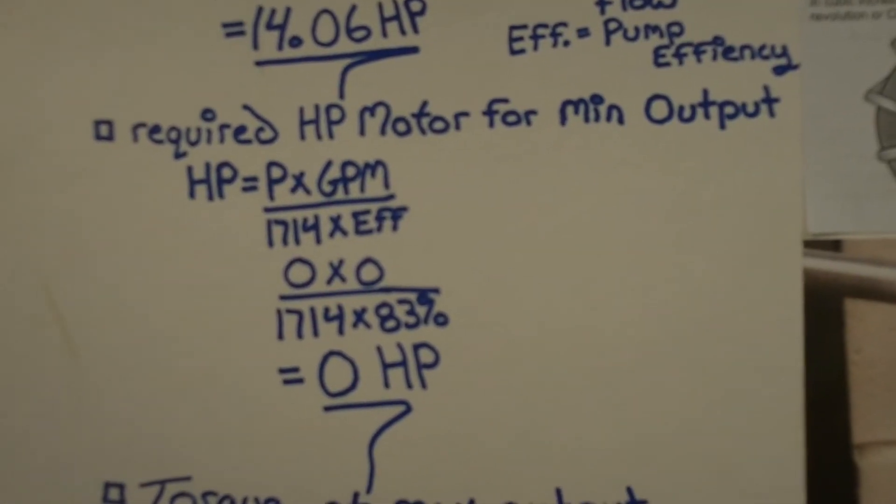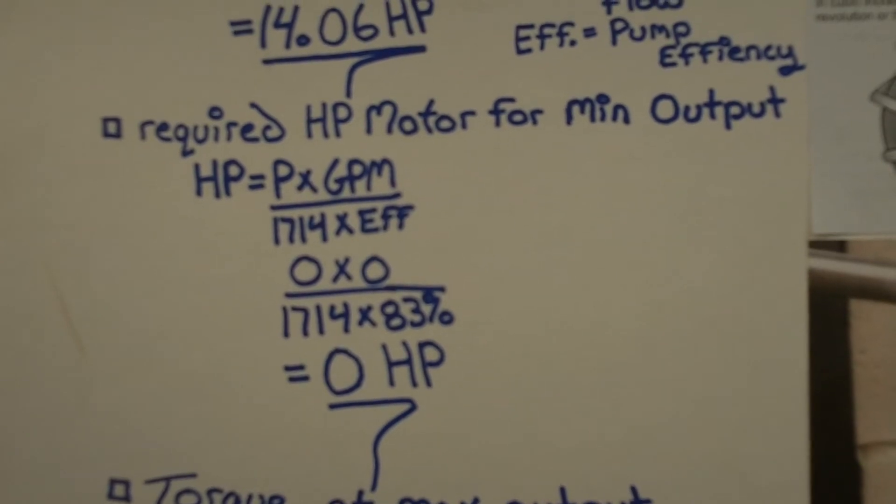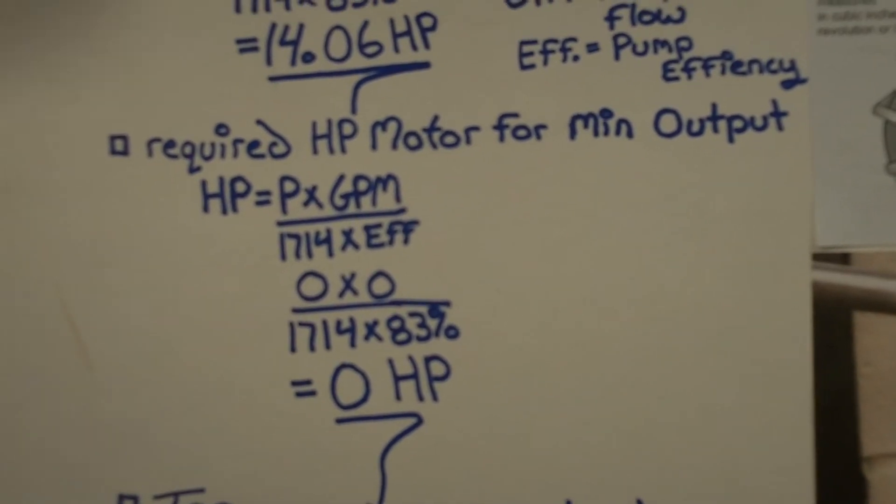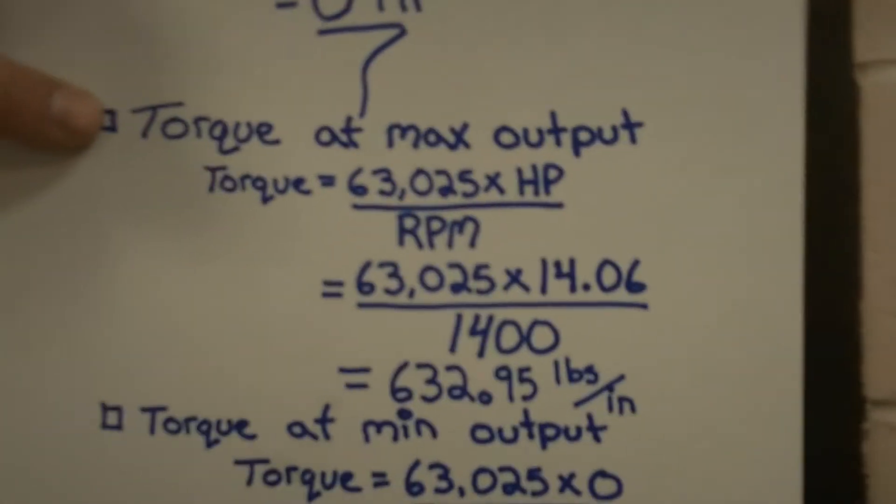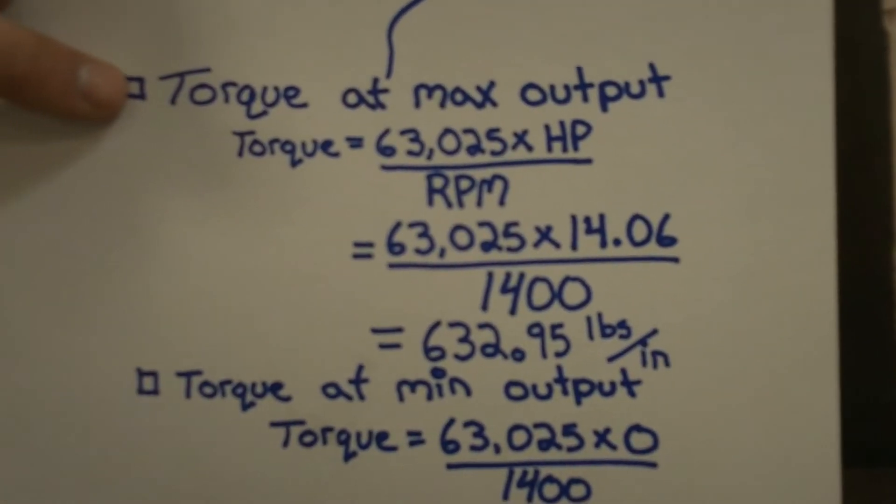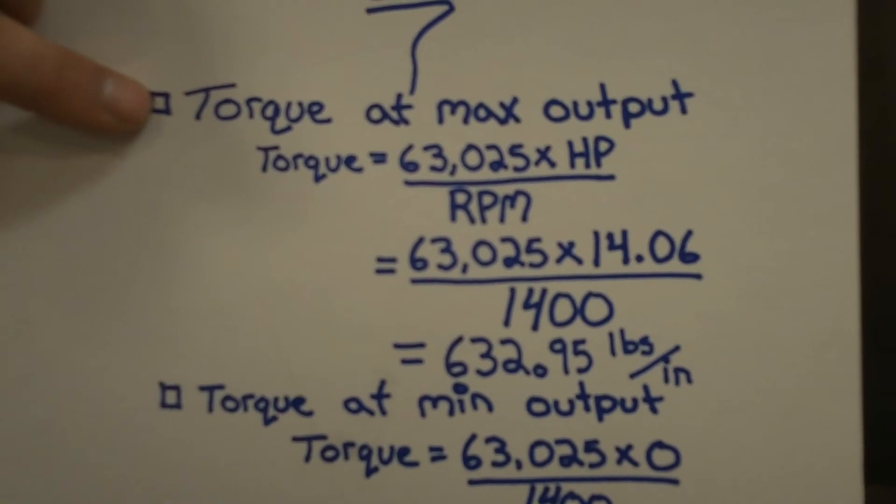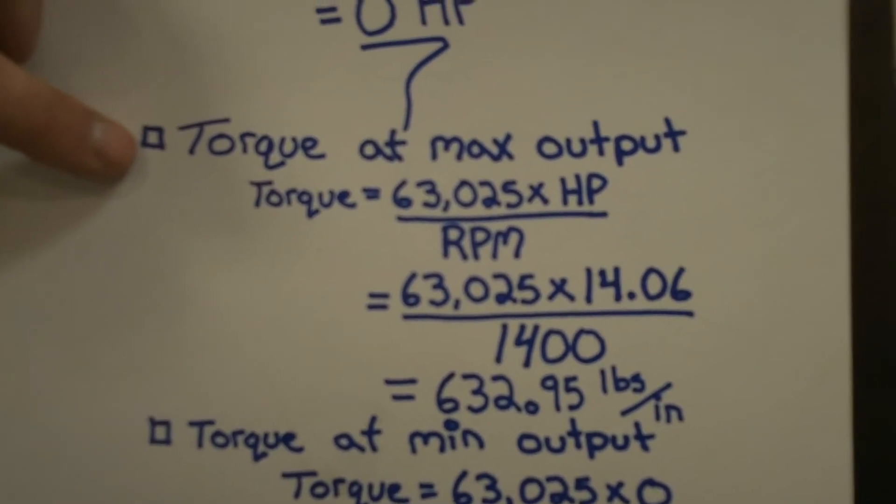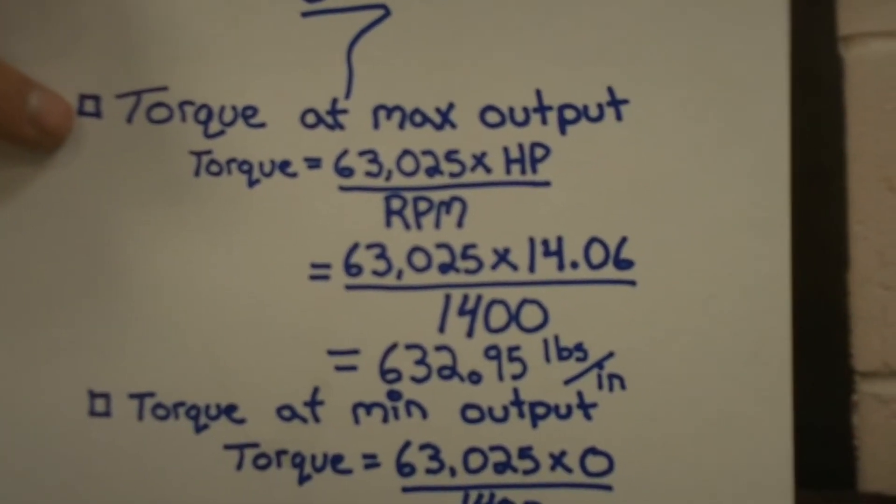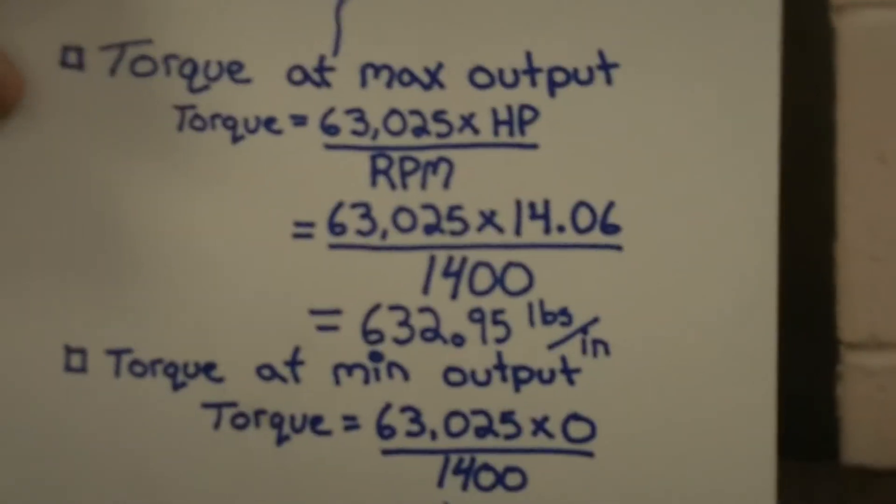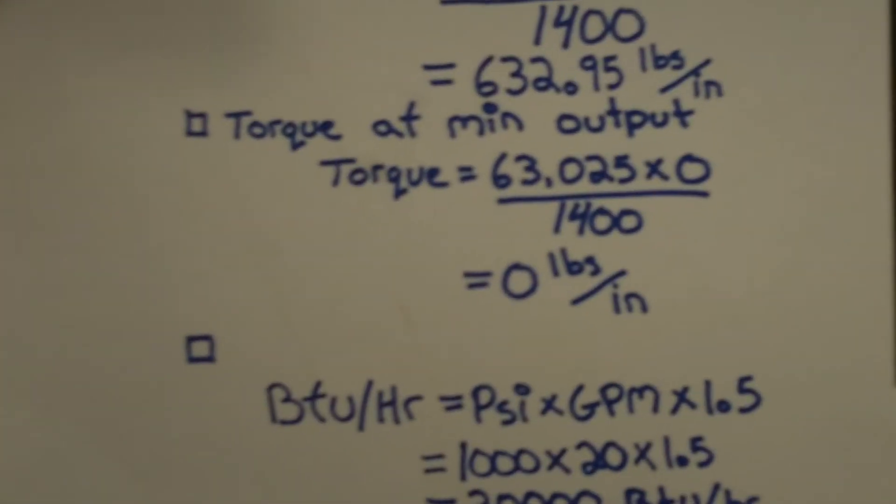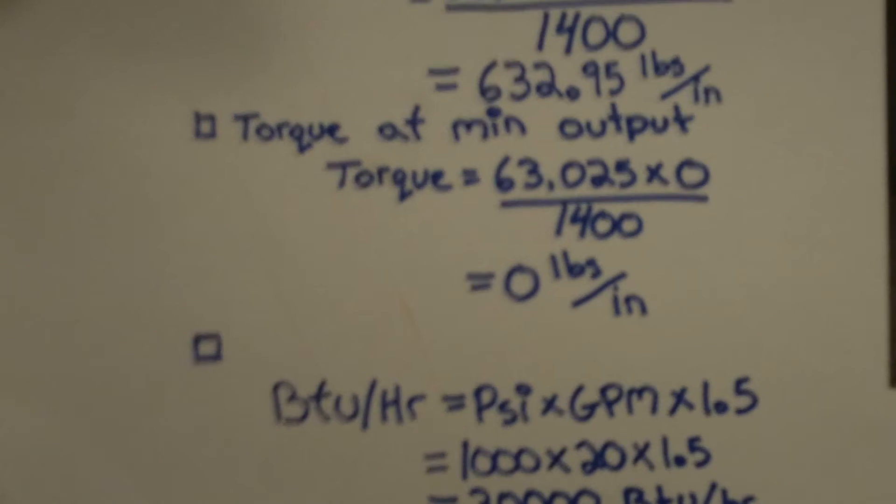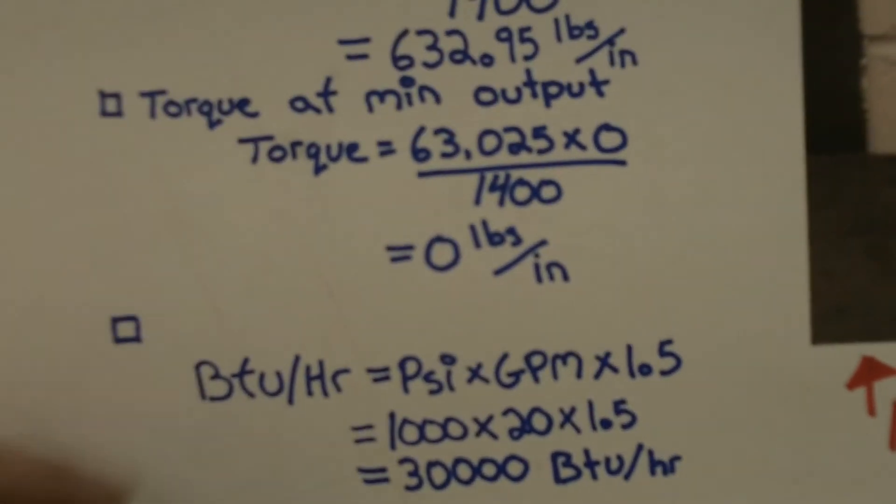The required horsepower is, well, zero when it's not running. The torque of it is 63,025 times the horsepower divided by RPM. And you get 632.95 pounds per inch. And when you apply nothing, you get nothing. Same thing at the top one.